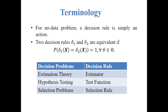The decision problem is sometimes called by different names in terms of the decision rule. For example, when we are working on estimation problems, our decision rule is called the estimator. In testing problems, we call it a test function. In selection problems, we call it the selection rule. These are all decision rules in decision theory.